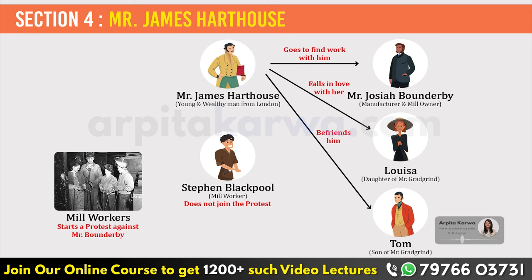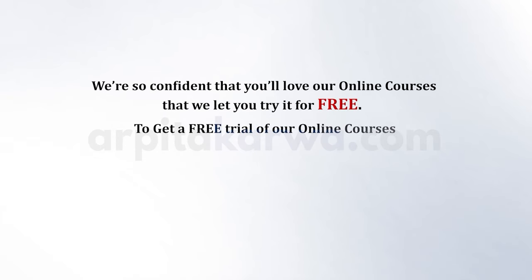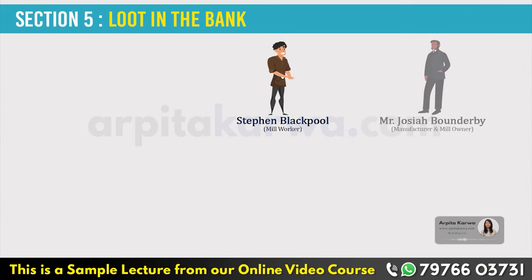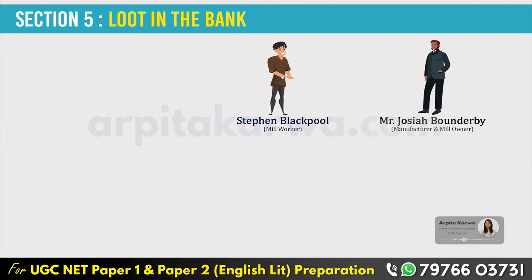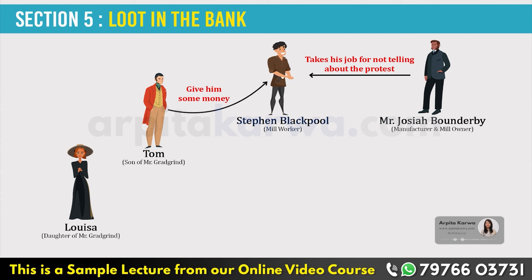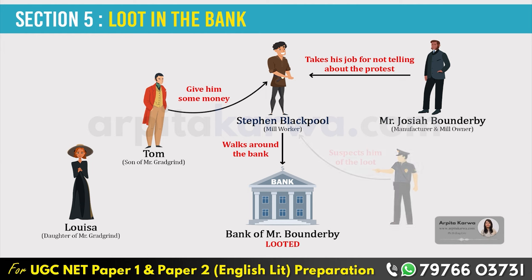Stephen does not join the union and does not participate in the protest, making all the workers unhappy with him. He is called to Mr. Bounderby and asked about the protests. However, Stephen does not want to betray his fellow workers, so he refuses to inform on them. This makes Bounderby very angry and he takes away Stephen's job. Louisa and Tom then give Stephen some money and ask him to quietly leave Coketown. Tom advises him to keep wandering near Bounderby's bank so he can find a job there. Stephen follows the advice, but one night the bank is robbed and since Stephen was seen walking around it, he is suspected of the robbery.